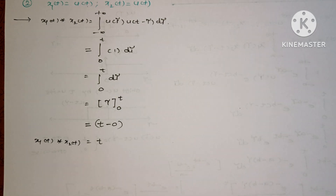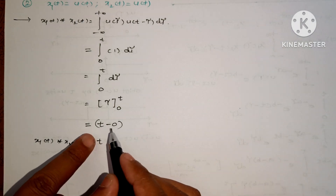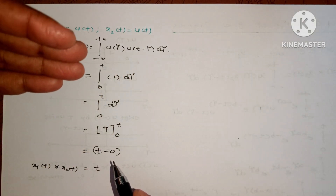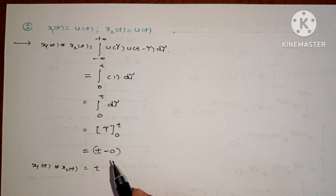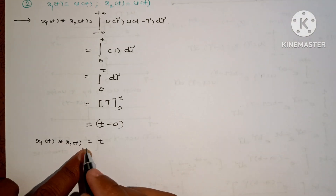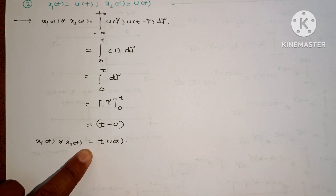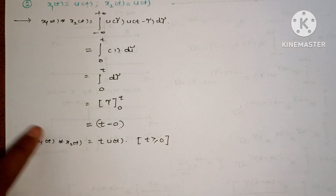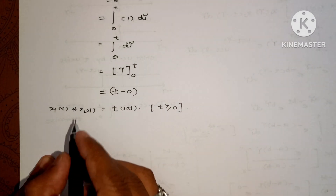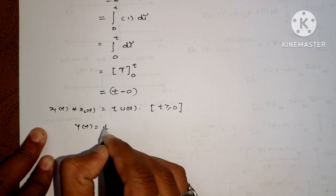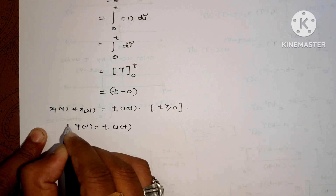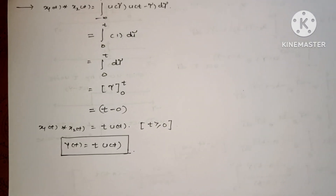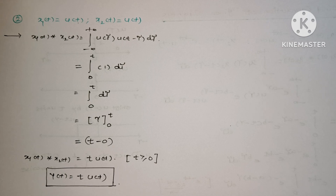This case is important: since we used u(τ) and u(t minus τ), meaning the amplitude is 1 only for values greater than 0, the result is valid for t greater than or equal to 0. So we write the convolution as t times u(t). Therefore, the final answer for the second question is y(t) equal to t·u(t).